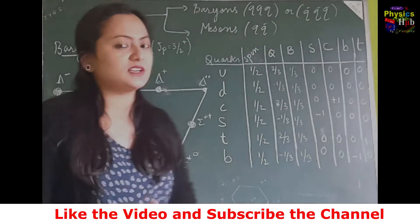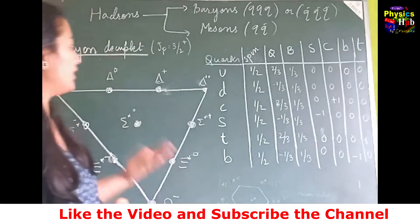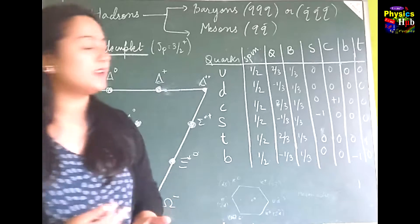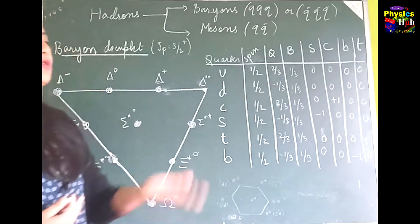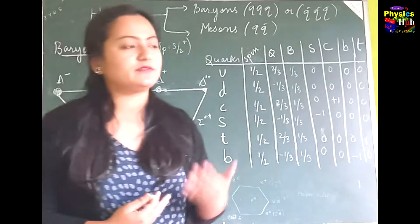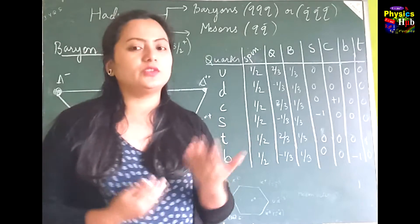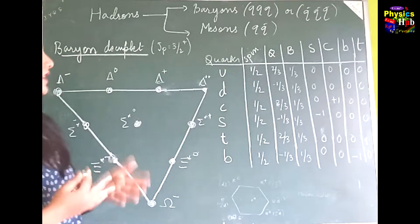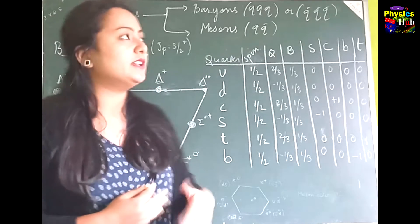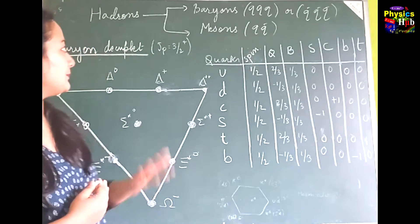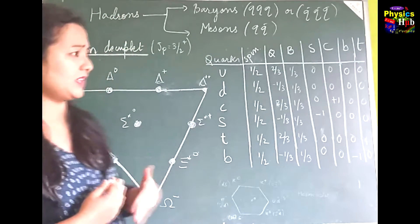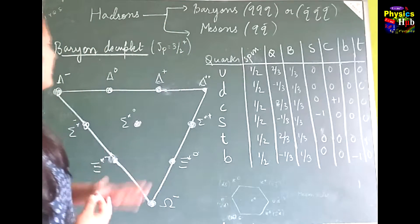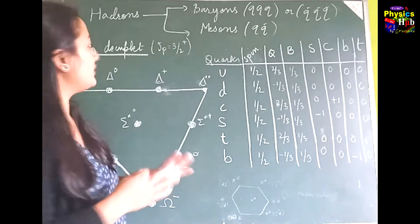So far we have discussed the four fundamental interactions, and then we went on to talk about conserved quantities — both universal conserved quantities and approximate conserved quantities. Now we come to the quark model.